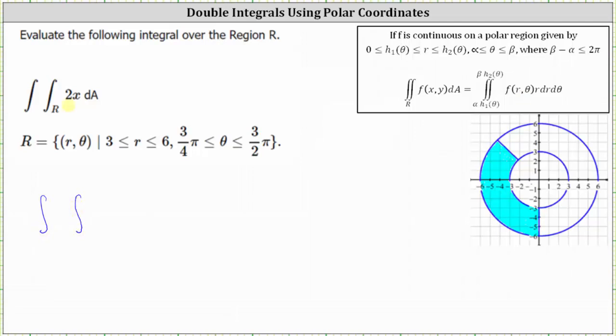X equals r cosine theta, and therefore 2X is 2r cosine theta. And then dA is equal to r dr dθ. The limits of integration for r are from 3 to 6. The limits of integration for theta are from 3/4 pi to 3/2 pi.